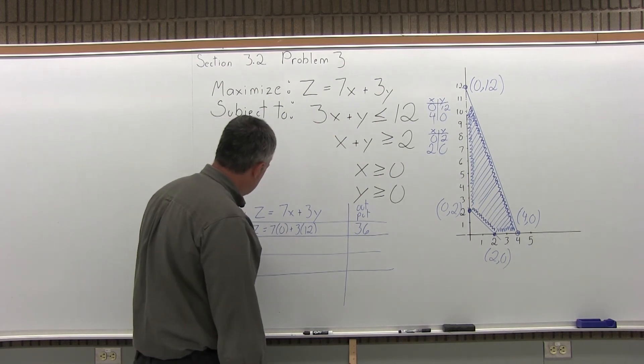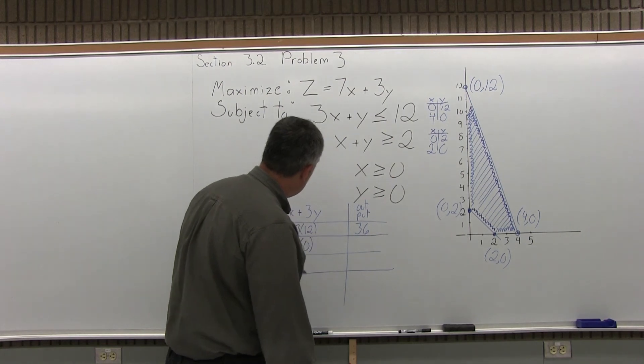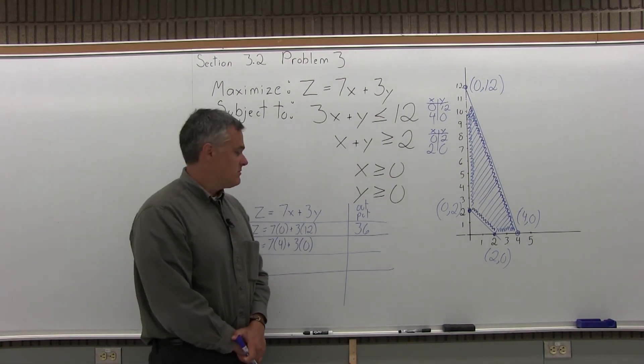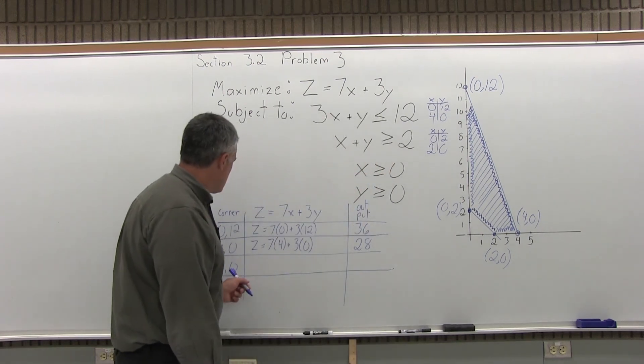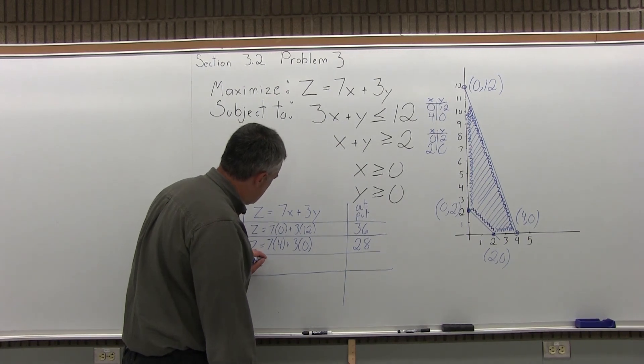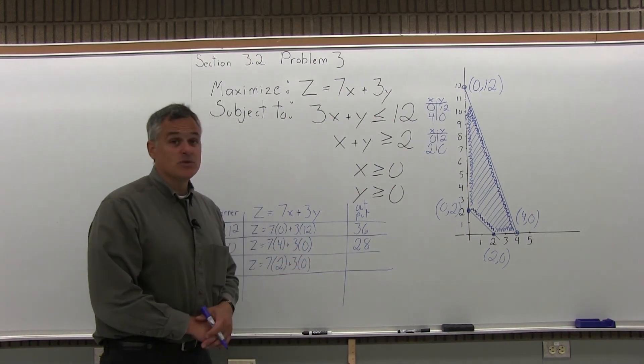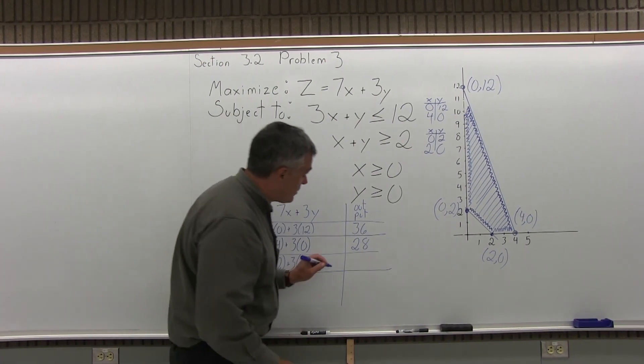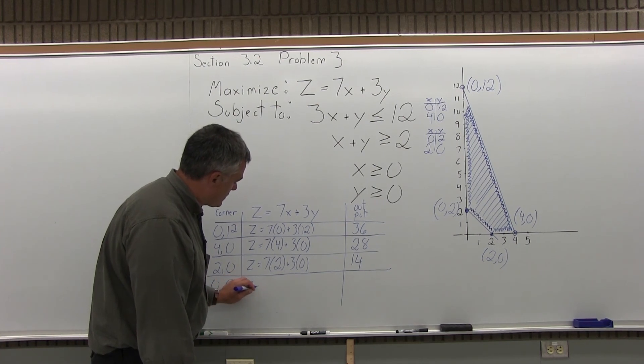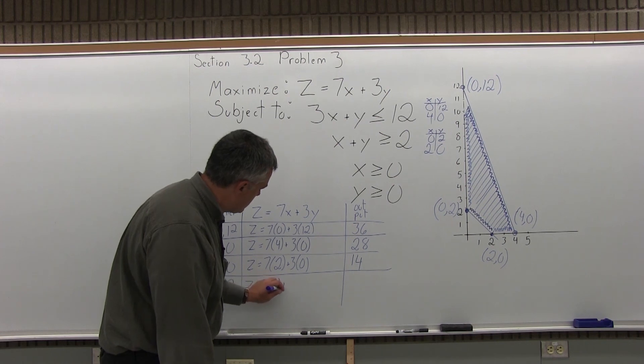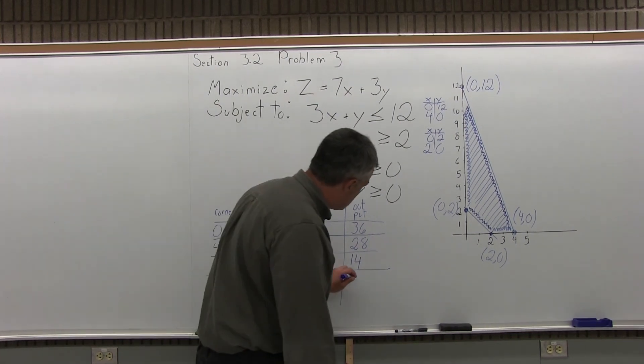The next corner point is 4, 0. So my objective function would be z equals 7x becomes 7 times 4. 3 times y becomes 3 times 0. So now 7 times 4 is 28. And 3 times 0 is 0. 28 plus 0 is 28. And the next corner point is 2, 0. So z equals 7 times x becomes 7 times 2. 3 times y becomes 3 times 0. 7 times 2 is 14. 3 times 0 is 0. 14 plus 0 is 14. And finally, one last corner point, 0, 2. So now when I put that in the objective function, z equals 7 times x becomes 7 times 0. And 3 times y is 3 times 2. 7 times 0 is 0. 3 times 2 is 6. 0 plus 6 is 6.